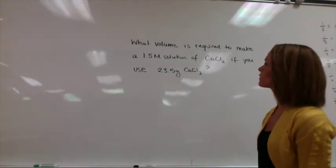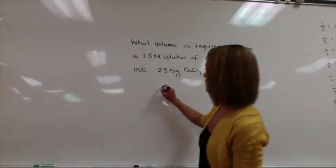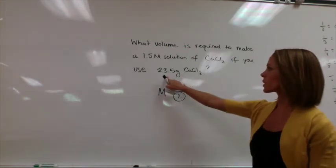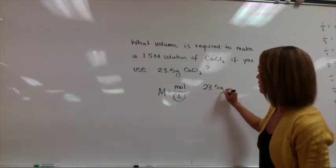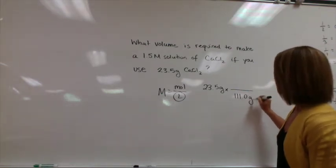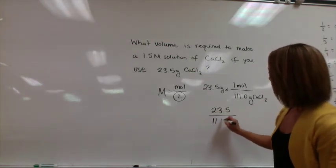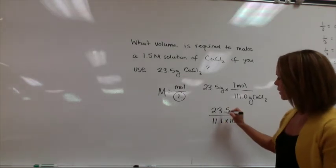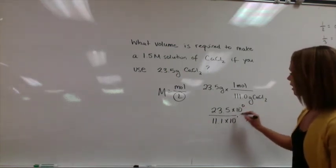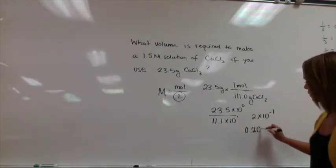Our next question is a molarity question. What volume is required to make a 1.5 molar solution of calcium chloride if you use 23.5 grams? First, molarity equals moles over liters. We need moles, and we were given 23.5 grams of calcium chloride. The molar mass of calcium chloride is 111.0 grams per mole. So we do 23.5 divided by 11.1 times 10 to the 1st. 11 goes into 23 about 2 times because 11 times 2 is 22. We get about 2 times 10 to the negative 1st, which is approximately 0.200 moles.